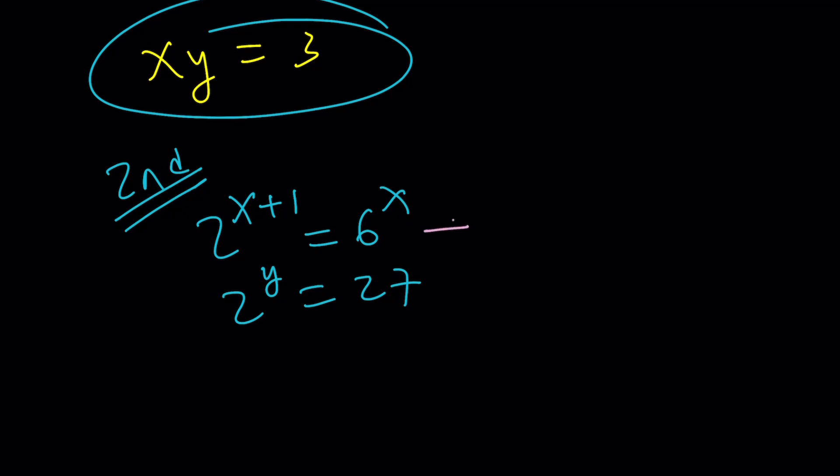So let's go ahead and simplify this first, because that will be helpful. We can write this as 2 to the x times 2 equals 6 to the x. And if you divide both sides by 2 to the x, that would give you something awesome. This would be 3 to the x equals 2. This will be very helpful in our expression.